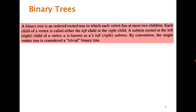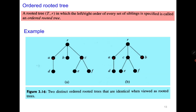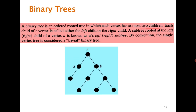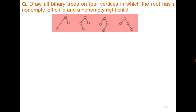The last concept is the binary tree. A binary tree is an ordered rooted tree where each vertex has at most two children. In earlier examples a vertex had three children, but in a binary rooted tree each vertex has at most two children. For instance, vertex a may have one child and vertex b may have two children — but never more than two. Try to draw all binary trees on four vertices in which the root has a non-empty left child and a non-empty right child. There are four such cases.